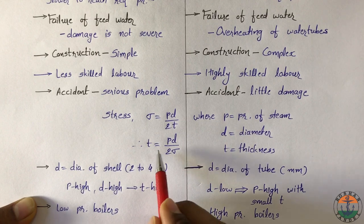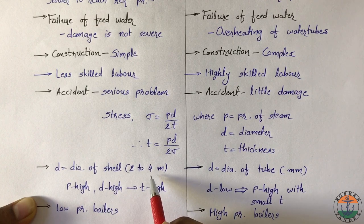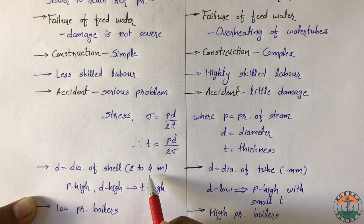In fire tube boiler, D is taken as diameter of shell, which can vary from 2 to 4 meter.